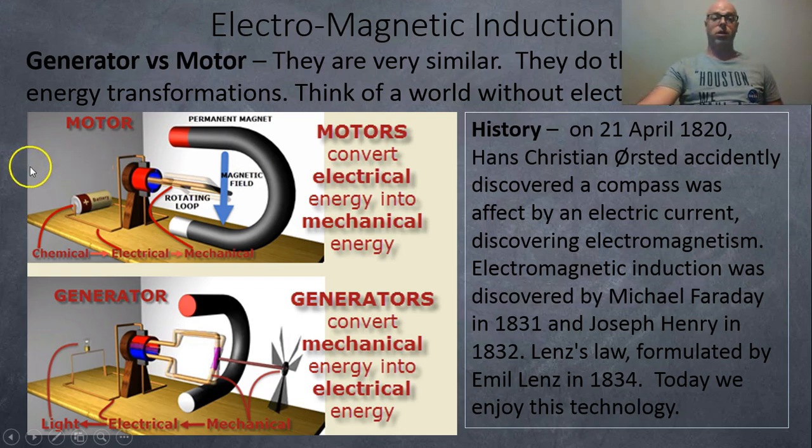So this explains it in the picture a little bit differently. You got a chemical reaction causing electrical potential, which causes mechanical. Over here, you've got mechanical turning into electrical and then turning into light over here.